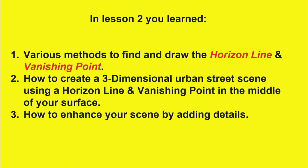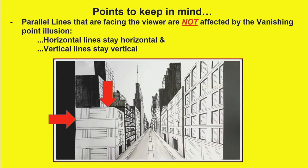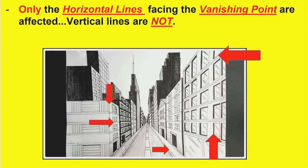Last time we discussed how to find and draw your horizon line and vanishing point, and how to create a three-dimensional urban scene and enhance it with details. Remember: parallel lines facing you directly will not be affected by the vanishing point. However, horizontal lines facing the vanishing point will be affected — the ones at the top lean down, the ones at the bottom come up. It's an illusion: as you walk down the street they stay parallel, but as you look down the street, they appear to bend.